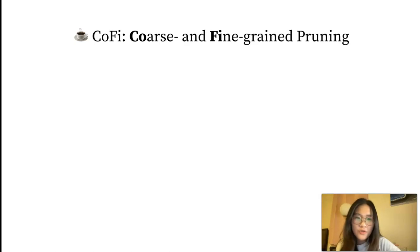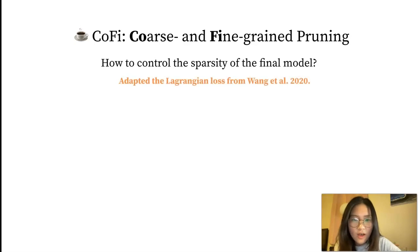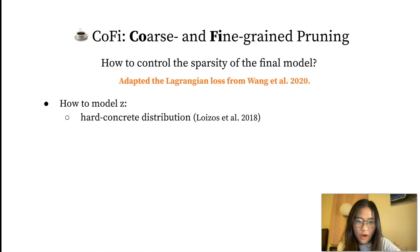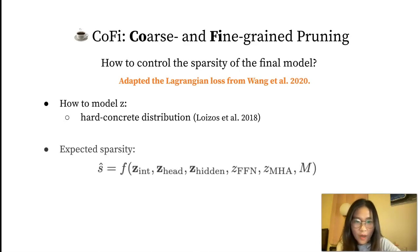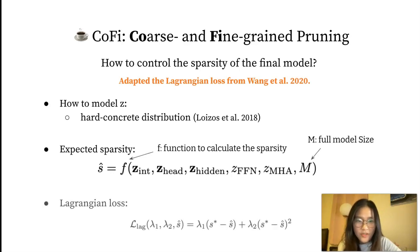How can we control the sparsity of the final model? We use a solution adapted from the Lagrangian dual. Basically, the masking variables are modeled with hard concrete distributions. And we can use the masking variables and the full model size to calculate the expected sparsity of the model. Given the target sparsity specified, we can calculate the equality constraint. Compared to conventional L0 regularization, this approach helps us rigorously control the sparsity of one model.